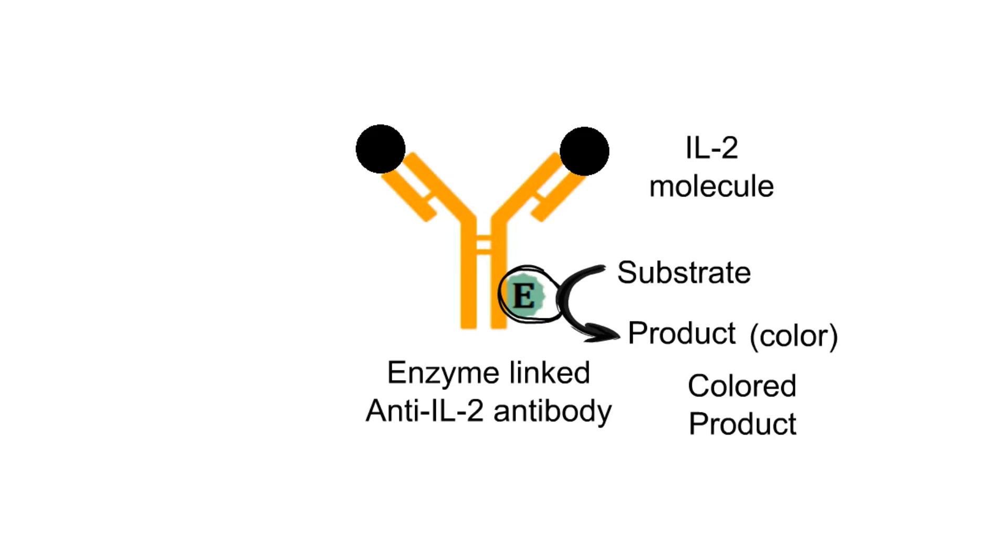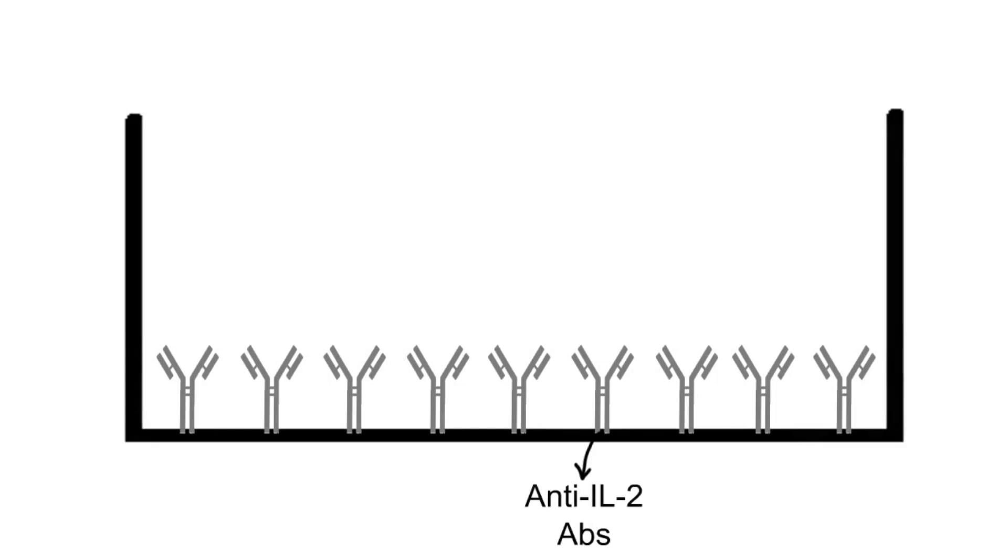Let us discuss the actual procedure. In the first step, anti-interleukin 2 antibodies are coated on the surface of microtiter well. Due to coating, the antibodies are firmly attached to the surface of microtiter well.